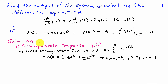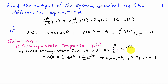Our solution involves two components: a steady-state response and a transient response. We're going to begin with the steady-state response y_s(t). We want to write the input in a steady-state form as a sum of exponentials.